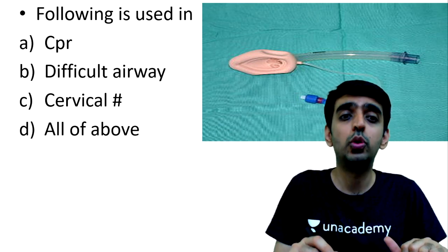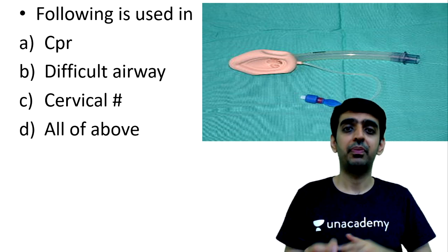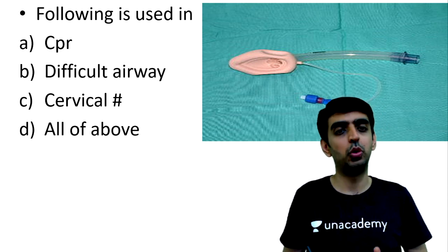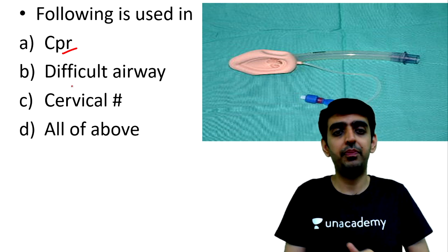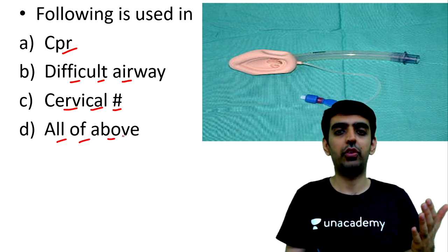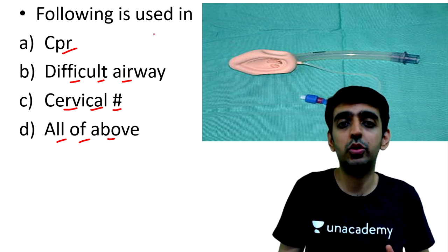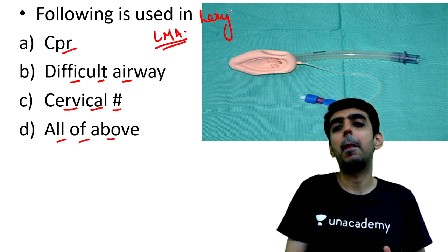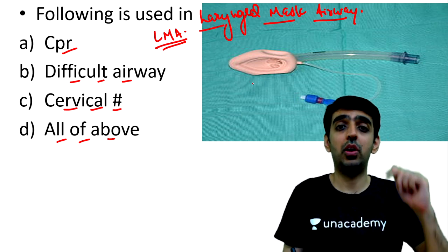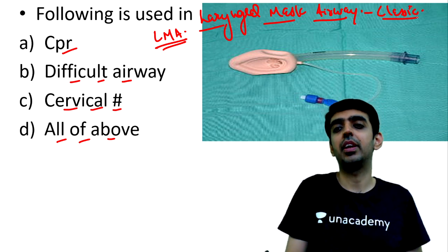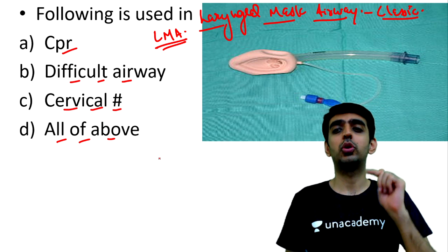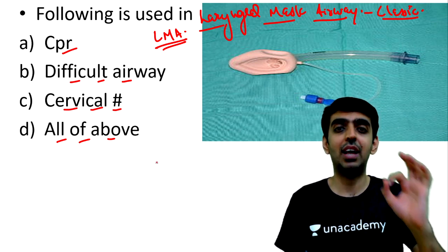Question 3: identify the image shown and determine which case it is used in — CPR, difficult airway, cervical fractures, or all of the above. The image shows a Classic LMA — laryngeal mask airway. There are various types: Classic LMA, ProSeal LMA, Intubating LMA, LMA Supreme, i-gel, and others. These are collectively called supraglottic airway devices.